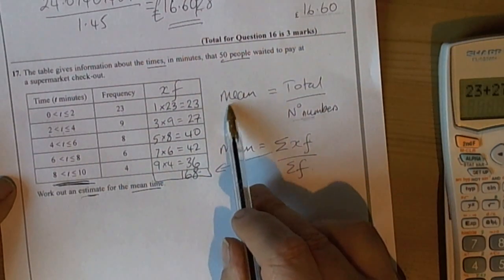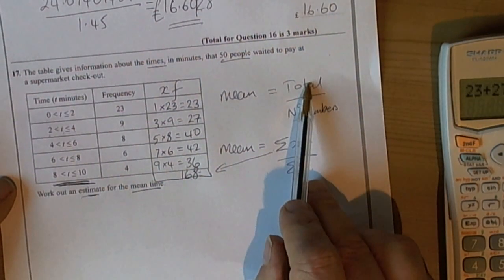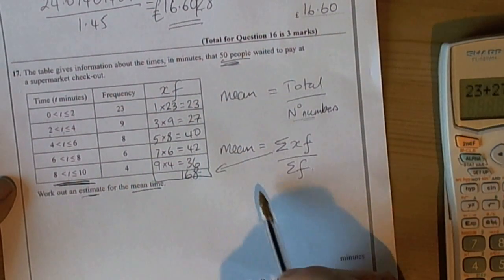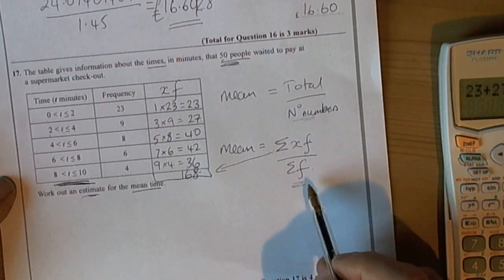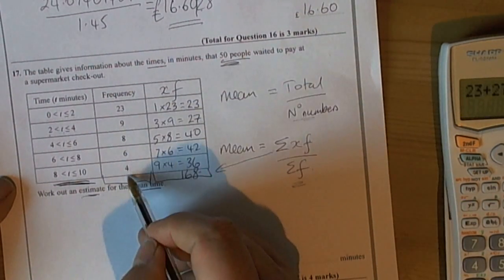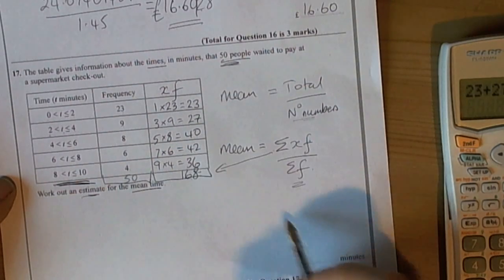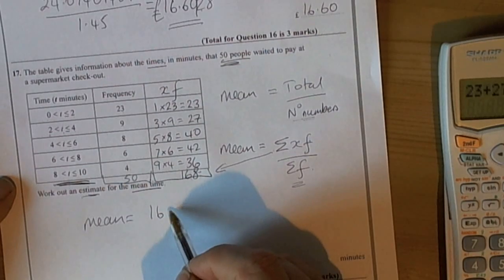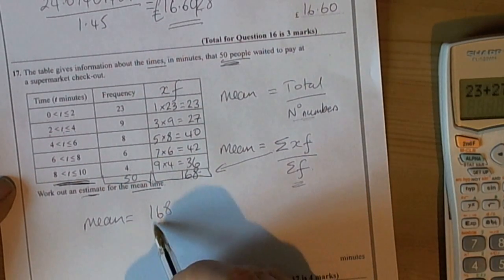The mean is the total of all the data divided by the number of numbers that gave you that total. So we look carefully - they told us there were 50 people. The formula says we want the sum of the frequencies. We could double check and add up the frequencies and find that it gives us 50.